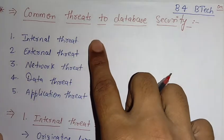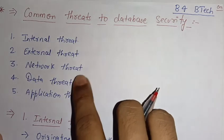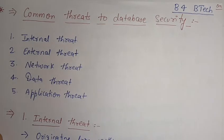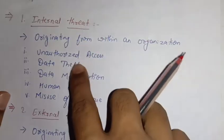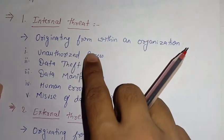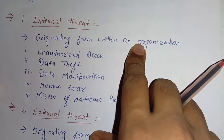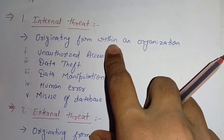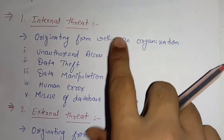The first one is internal threat, second is external threat, third is network threat, fourth is data threat, and fifth is application threat. First we will see about internal threat. Basically it originates from within an organization — this threat is due to a person who is working inside that organization, an insider person.